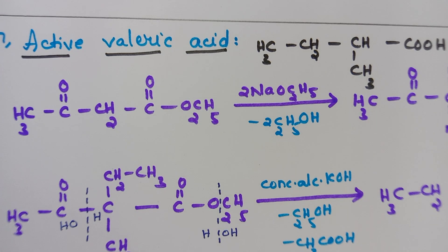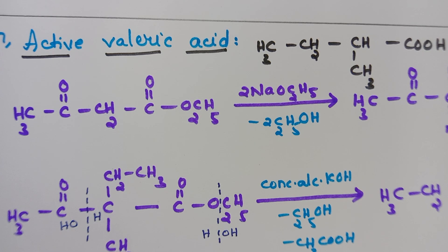So this is all about the preparation of monocarboxylic acids from acetoacetic ester by acetic hydrolysis, using concentrated alcoholic KOH as the reagent. Please write down in your notebooks and kindly practice. Don't forget to like the video, share with your friends, and if you are watching for the first time please subscribe to the channel. Take care — meet you in the next video with a new topic.